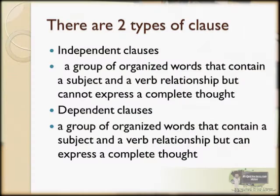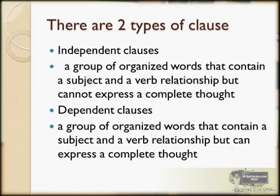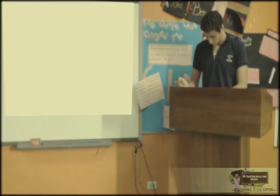A clause is a group of organized words containing a subject and a verb. There are two types of clause: an independent clause and a dependent clause. A dependent clause is a group of organized words that contain a subject and a verb relationship but cannot express a complete thought.